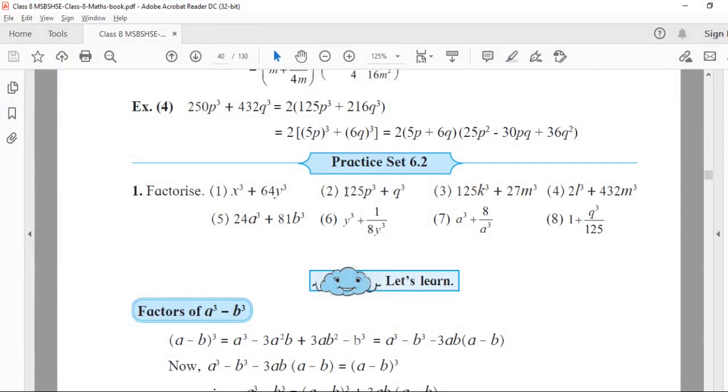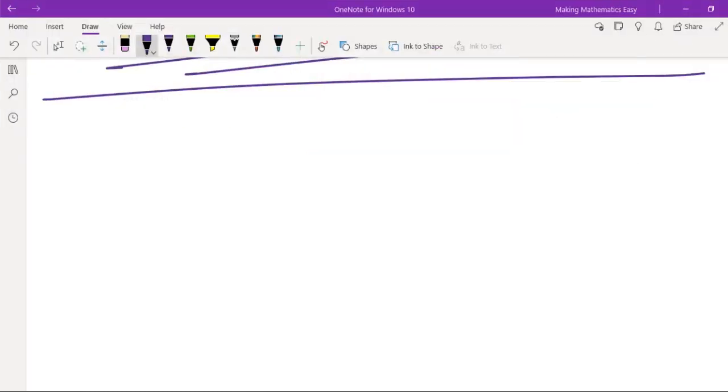Let us continue with sum number two for exercise 6.2, which is 125P cube plus Q cube.